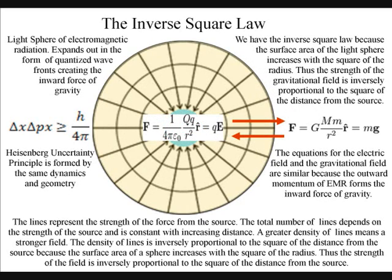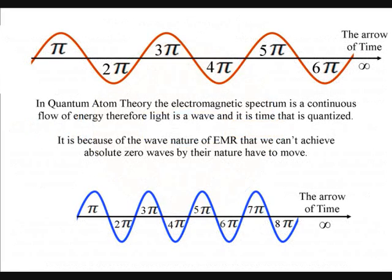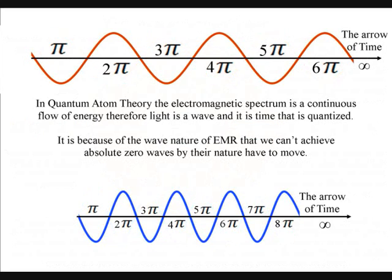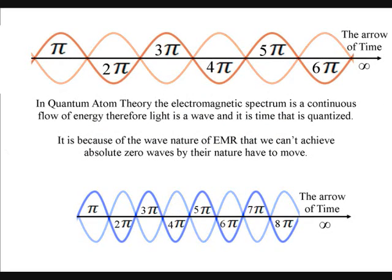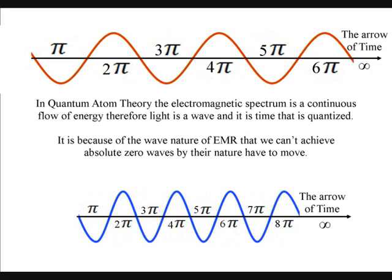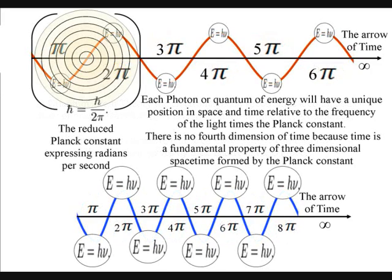The symmetry and geometry of light forming the curvature of spacetime is the key to understanding the reality of quantum mechanics. Only energy will be transferred by electromagnetic radiation, giving each photon of energy its own unique position in space and time.